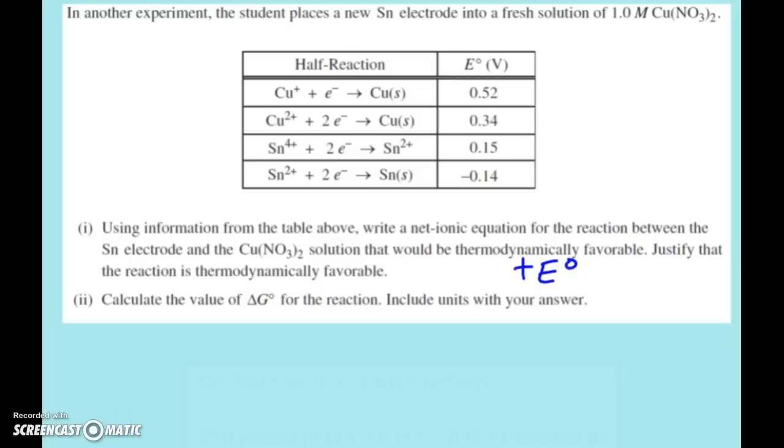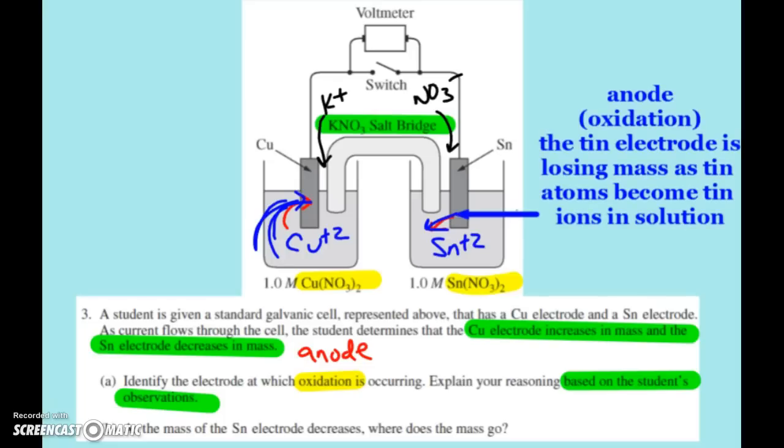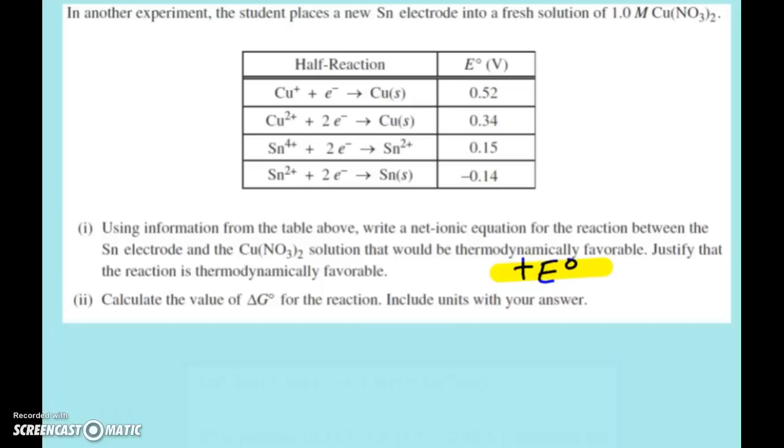So you can talk about and calculate E naught and get a positive value. Or you can also reference because these are the same chemicals we had earlier that when we had tin and copper hooked up, that tin was the site of oxidation and copper is a site of reduction. Okay, but when we look on our table, they tried to move you up a little bit by adding the copper plus one and the tin plus four reduction potentials. We don't want those because we know that we've got copper nitrate, two nitrates, so it's plus two. So you want to focus on and make sure that you use the copper plus two potential and the tin plus two.